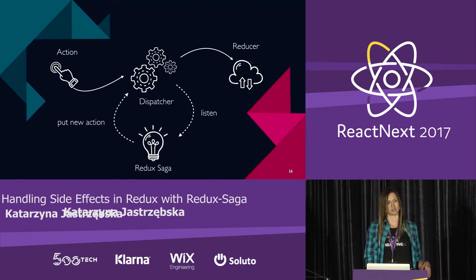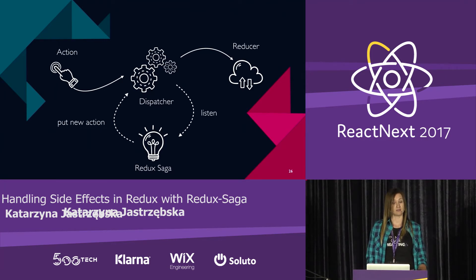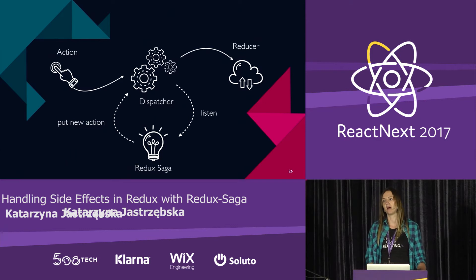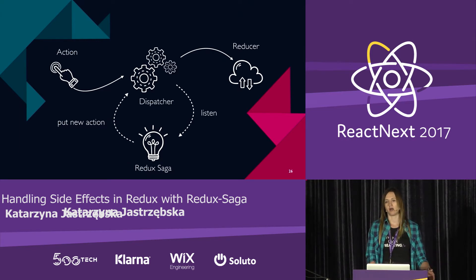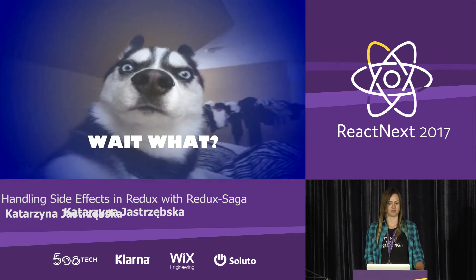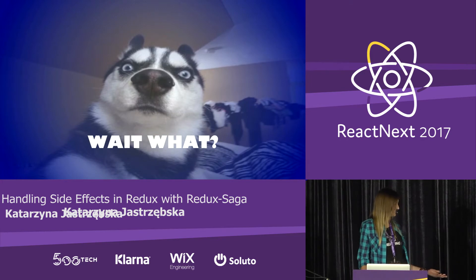Redux Saga works in parallel — we apply it as middleware — and it starts to listen. It listens and reacts to any dispatched action. So it's pretty simple, but how is it possible to make async operations look that easy?